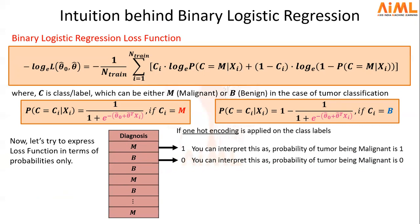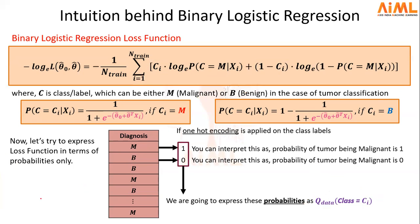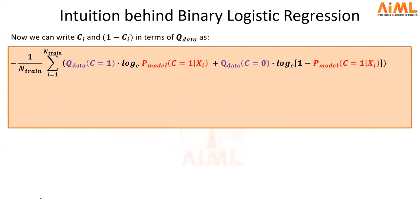We are going to finally sum up these probabilities in the form of a probability distribution, which is given by Q_data. And if you look at C_i and 1 minus C_i in your loss function, what we are going to do is replace this C_i and 1 minus C_i and express them in terms of Q_data. As you can see, we have replaced C_i with Q_data equals 1, and 1 minus C_i with Q_data equal to 0.